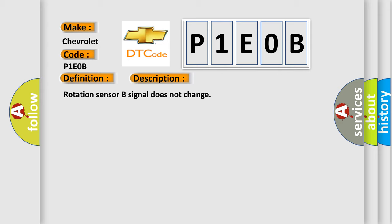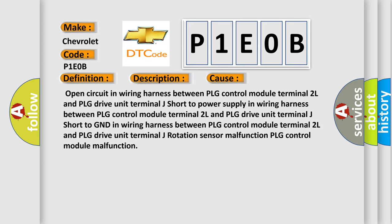This diagnostic error occurs most often in these cases: Open circuit in wiring harness between PLG control module terminal 2L and PLG drive unit terminal J, short to GND in wiring harness between PLG control module terminal 2L and PLG drive unit terminal J, rotation sensor malfunction, or PLG control module malfunction.